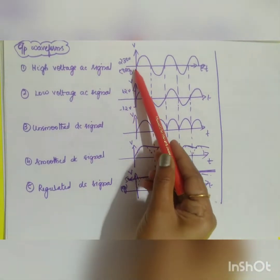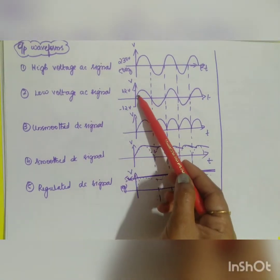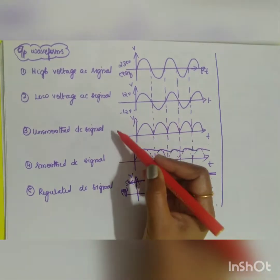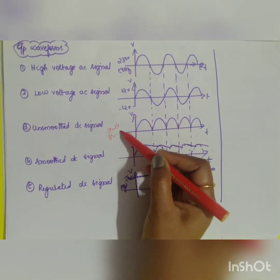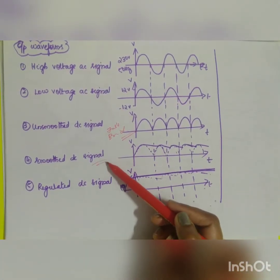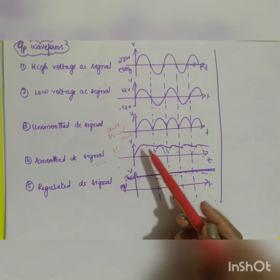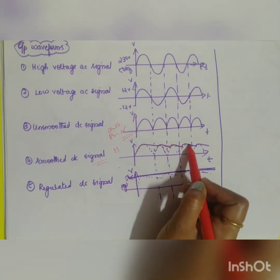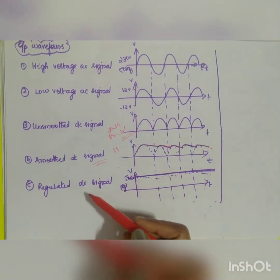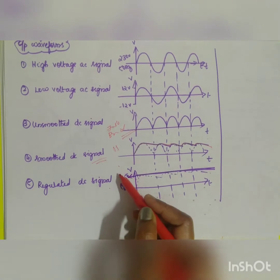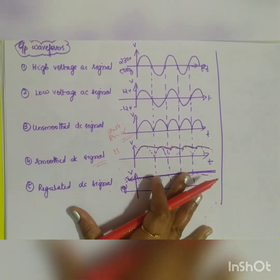The waveforms at each stage are: a high voltage AC signal (230V 50Hz), then a low voltage AC signal (12V), then an unsmoothed DC signal — shown for a full wave or bridge rectifier. After the capacitor is added, you get a smooth DC signal with only small ripples present. This is then converted to a regulated DC signal using a voltage regulator, typically a Zener diode circuit.